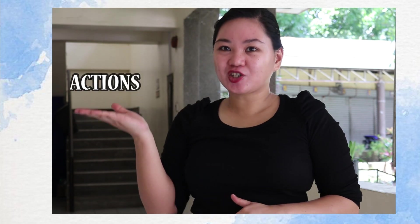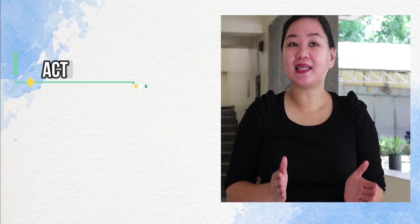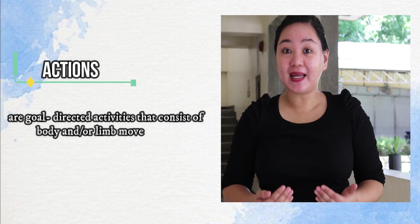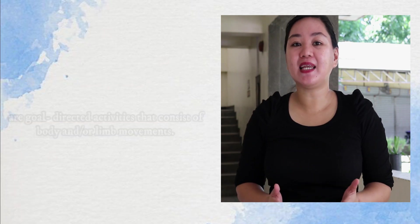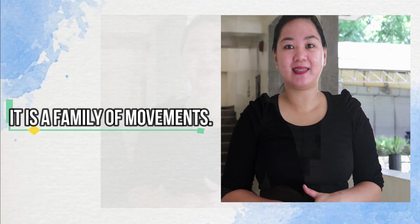In the motor learning and control literature, a term that has become more common specifically for motor skill is the term actions. For our objective, we will use the term as synonymous with skills. That is, actions are goal-directed activities that consist of body and limb movements. Another way of defining an action is to say that it is a family of movements. Some have referred to an action as an equivalence class of movements.